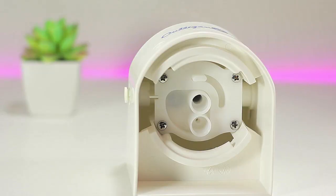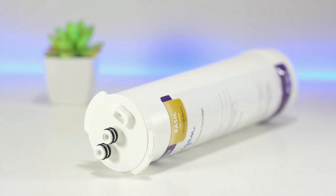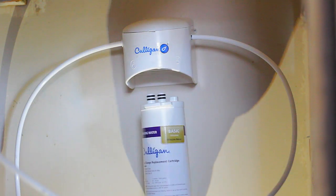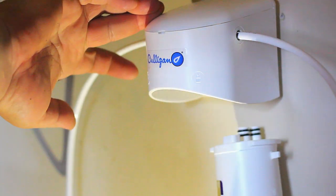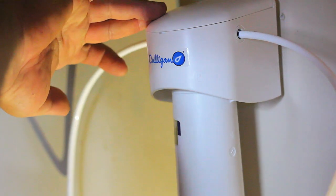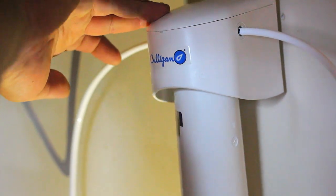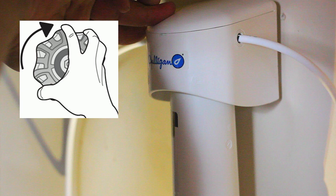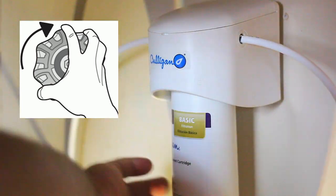We've got to the easiest part of the installation - installing the filter. You're going to line up the filter connections to the filter home's connections and twist. Once you do that, you're one step away from having clean drinking water. Now we can open the water supply.